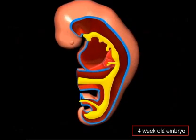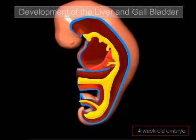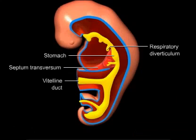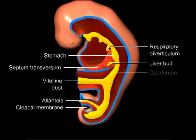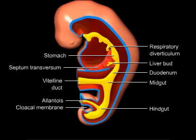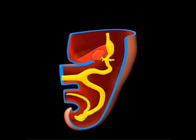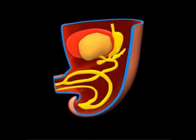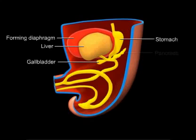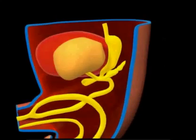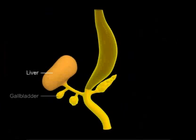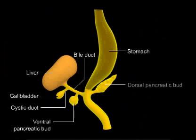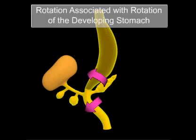Liver development begins with the appearance of the hepatic diverticulum (liver bud) as an outgrowth from the ventral wall of the distal foregut. The stalk connecting the diverticulum and the foregut narrows and forms the bile duct, whereas the gallbladder and cystic duct form as a ventral outgrowth from the bile duct. Initially the bile duct opens anteriorly into the duodenum but ends up posteriorly due to the rotational changes of the duodenum. This positions the future liver between the foregut and ventral abdominal wall, dividing the ventral mesentery into the lesser omentum and the falciform ligament.